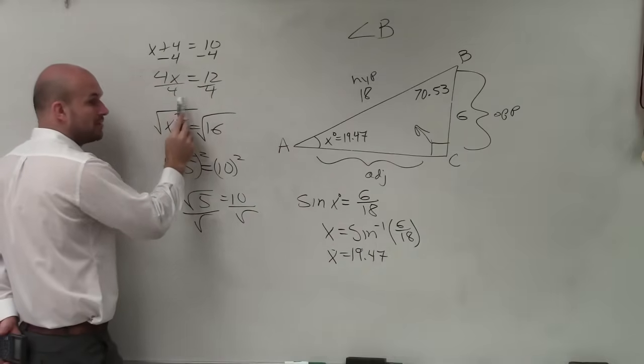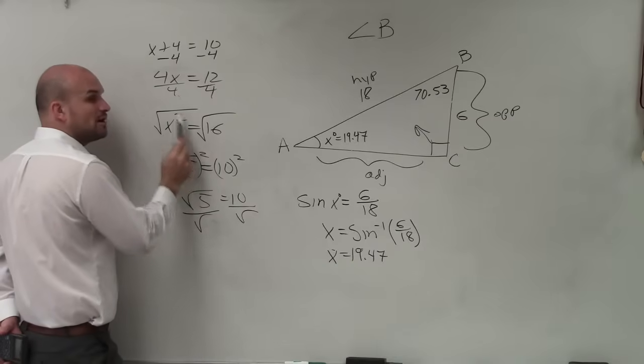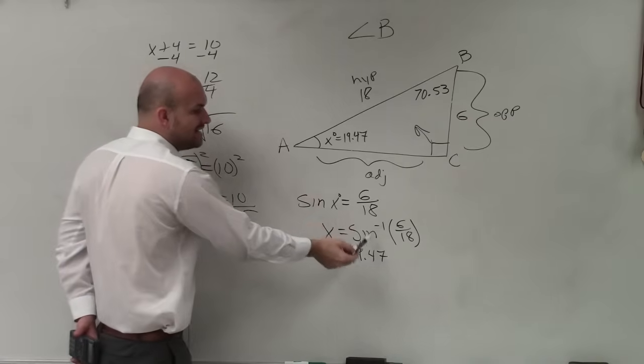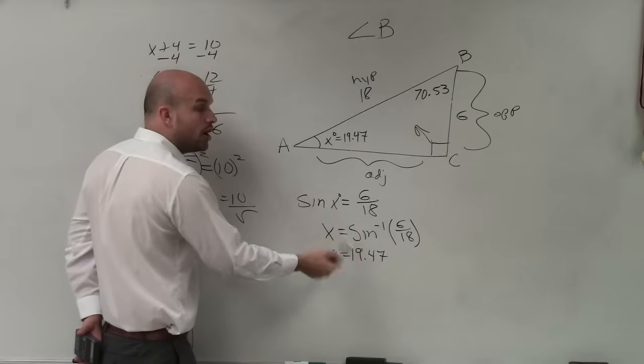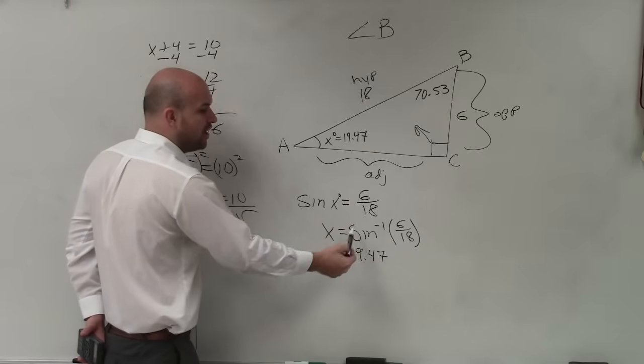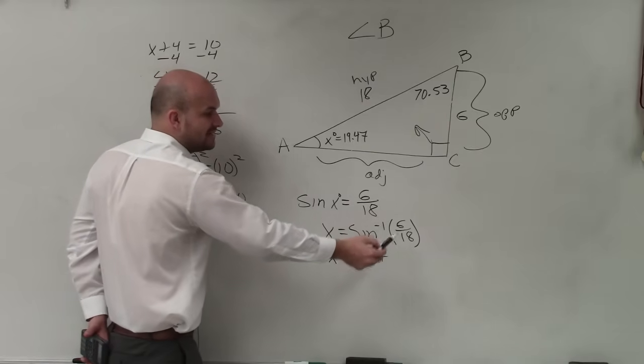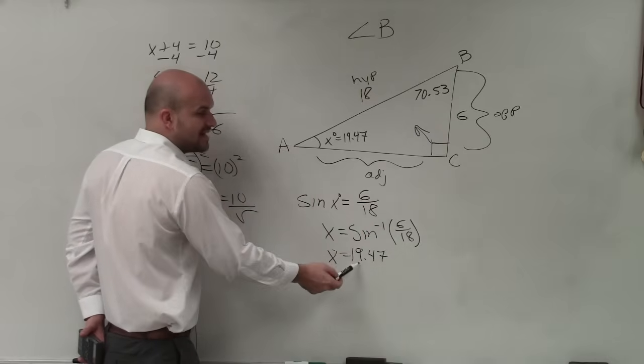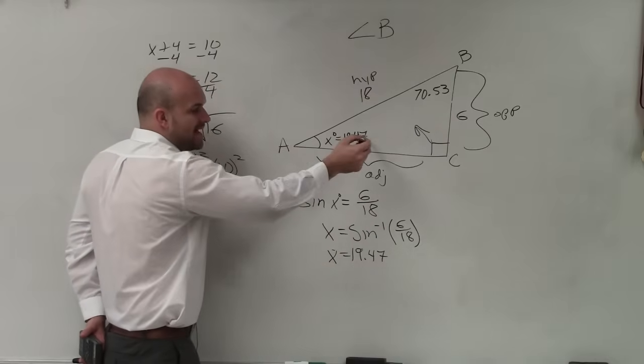The opposite of multiplying by 4 is dividing by 4. The opposite of squaring x is square rooting x. The opposite of sine is inverse sine. So then all you do, you have to have a calculator. All you do is take the inverse of that sine and inverse of 6 over 18, and that's the number you get. That is my angle.